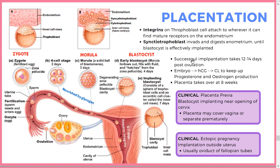The embryo produces hCG to keep the corpus luteum going, maintaining thick, nutritious uterine walls for implantation. At around 8 weeks to 3 months, the placenta takes over. Clinical problems include ectopic pregnancy — implantation anywhere other than the uterus — and placenta previa, where the placenta covers the cervical opening because the blastocyst implanted too close to it. Ruptured ectopic pregnancy is a medical emergency.